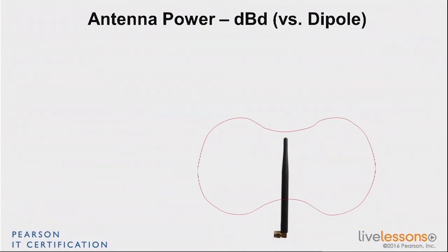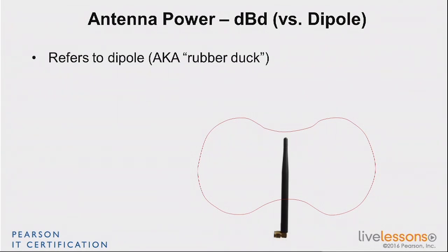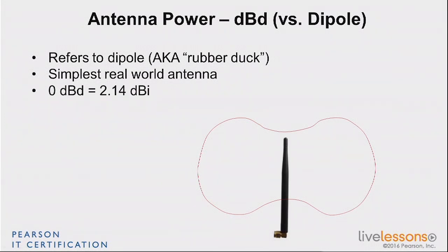It's also called a rubber duck — the cheap antenna you get with basic Wi-Fi hardware. That antenna has a radiation pattern that is not exactly perfect, but it's simple. We can compare it to a dBi antenna anyway, because a rubber duck is 2.14 dBi. Using one scale or the other doesn't matter. If you see something in dBd — dB referenced to the dipole instead of dBi, referenced to the isotropic — you can just remove or add 2.14 to move from one scale to the other.